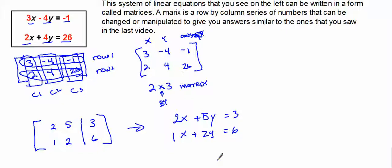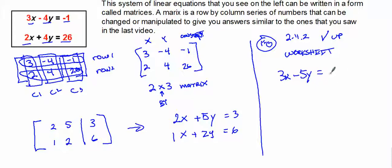If you're looking at number 10 on your 2.4.2 checkup worksheet, you will see you're given a system of equations: 3X minus 5Y equals negative 2, and you're also given 2X plus 9Y equals negative 26.